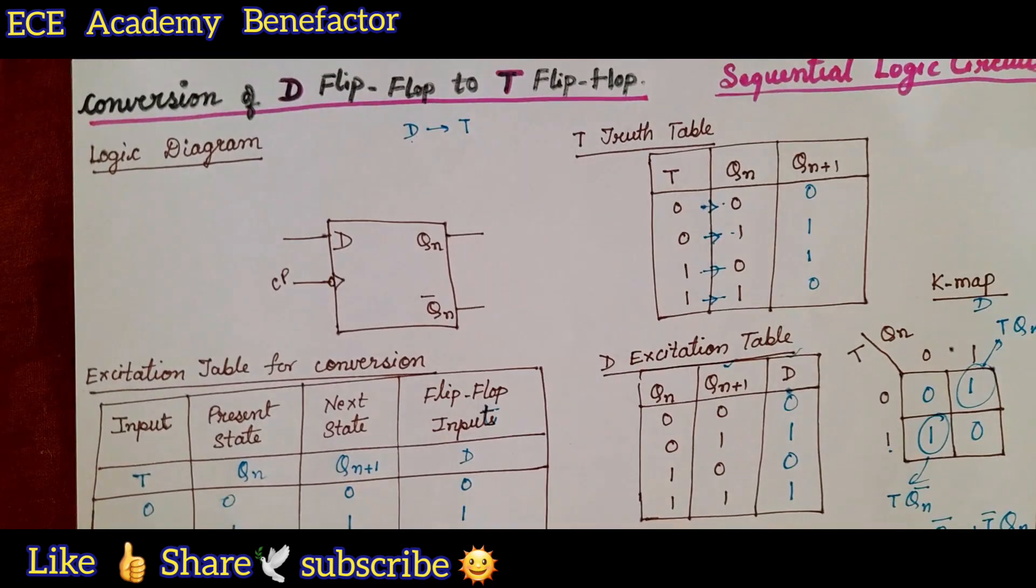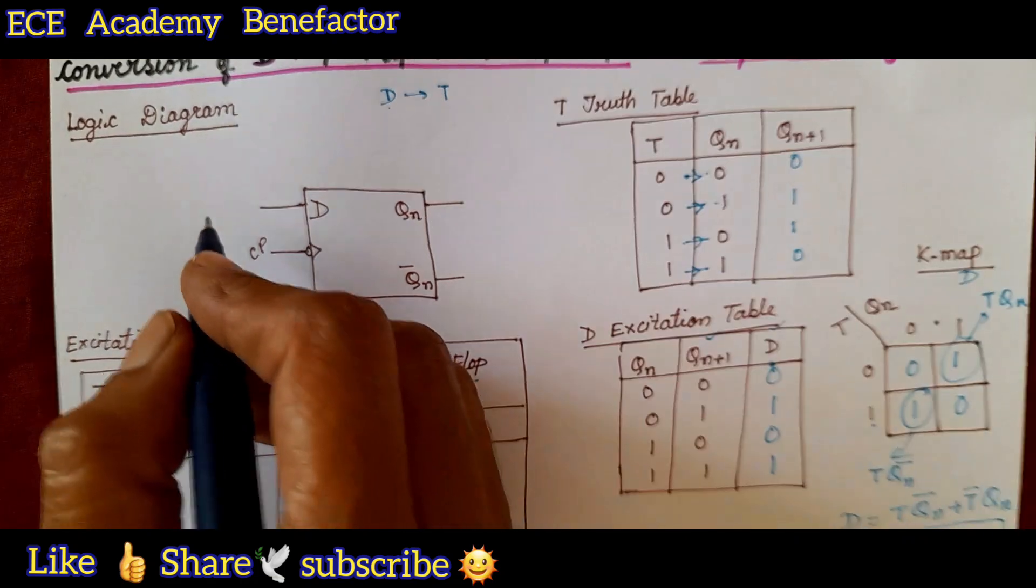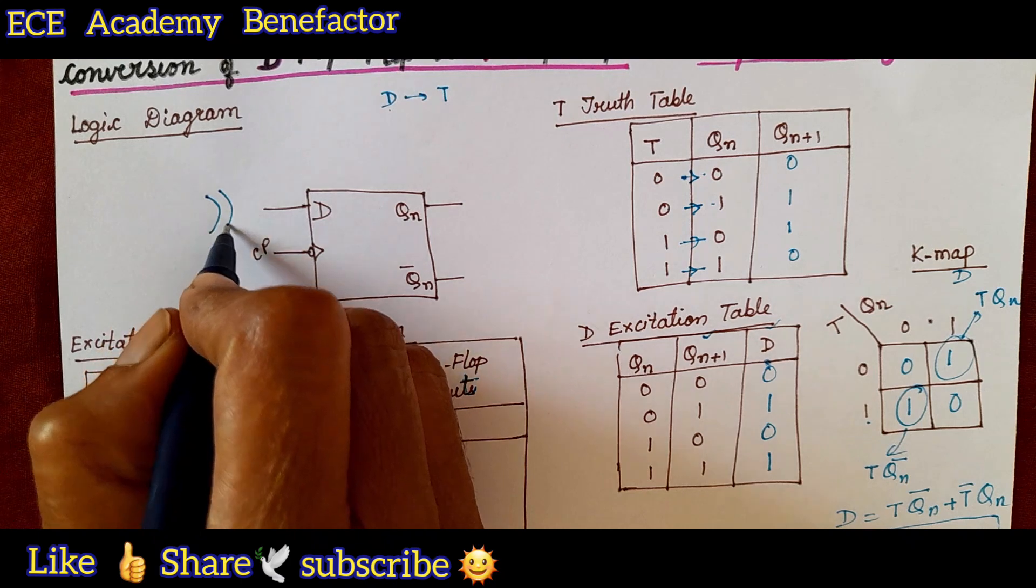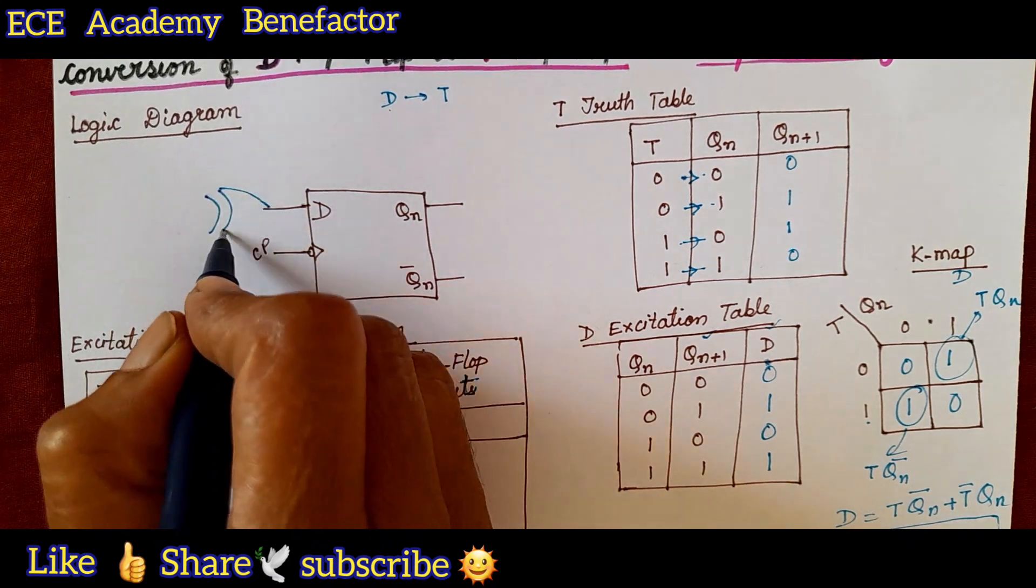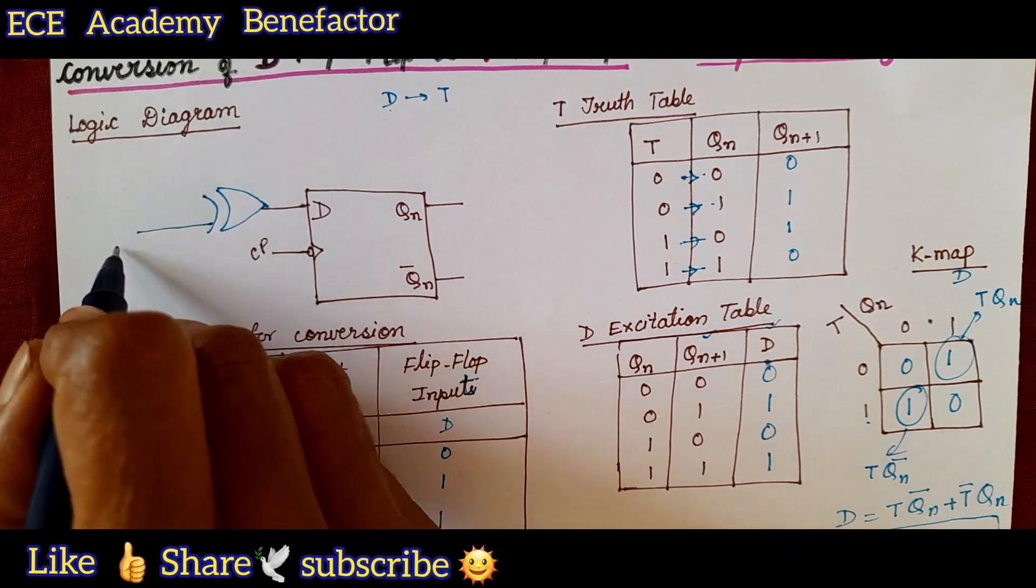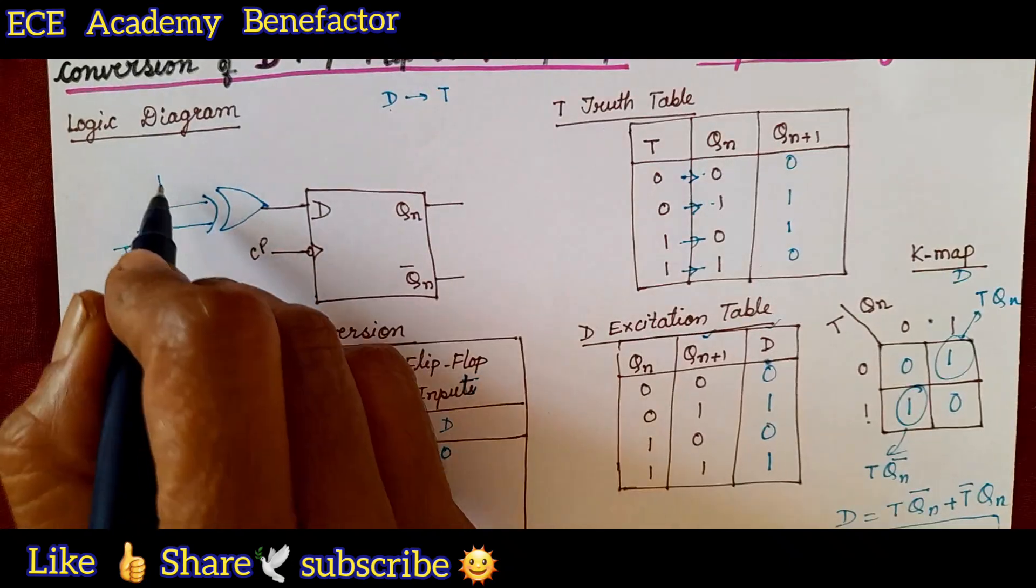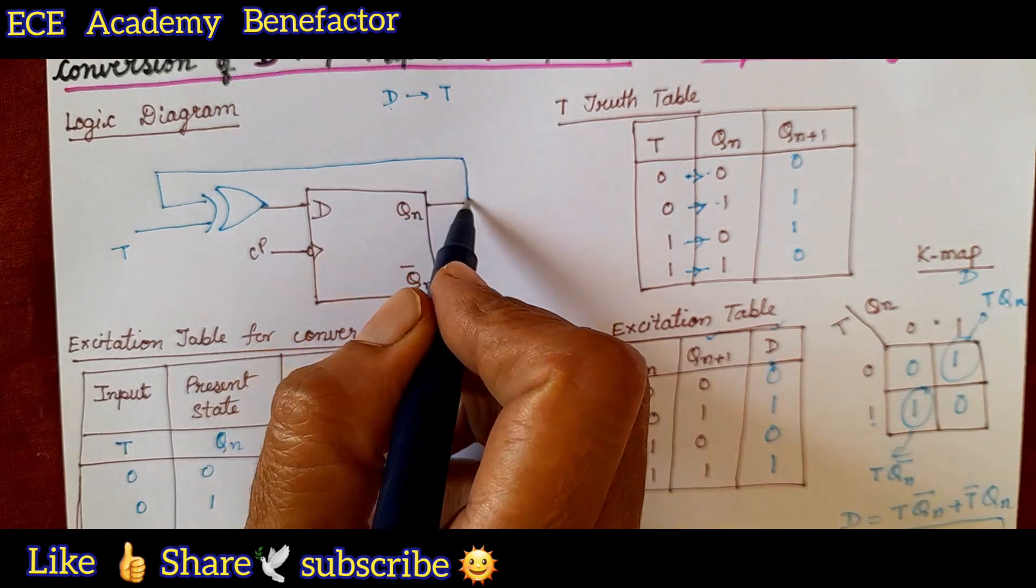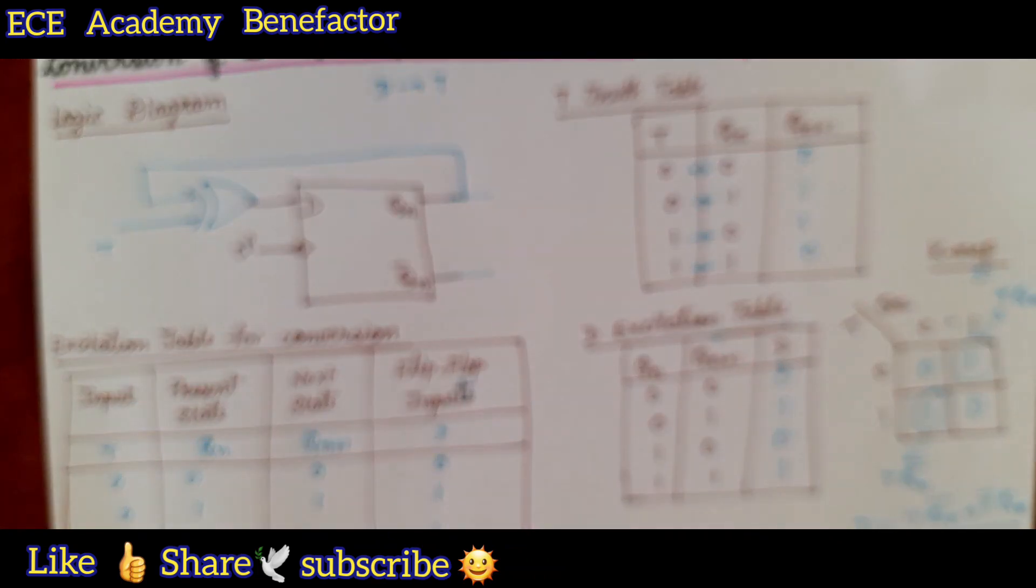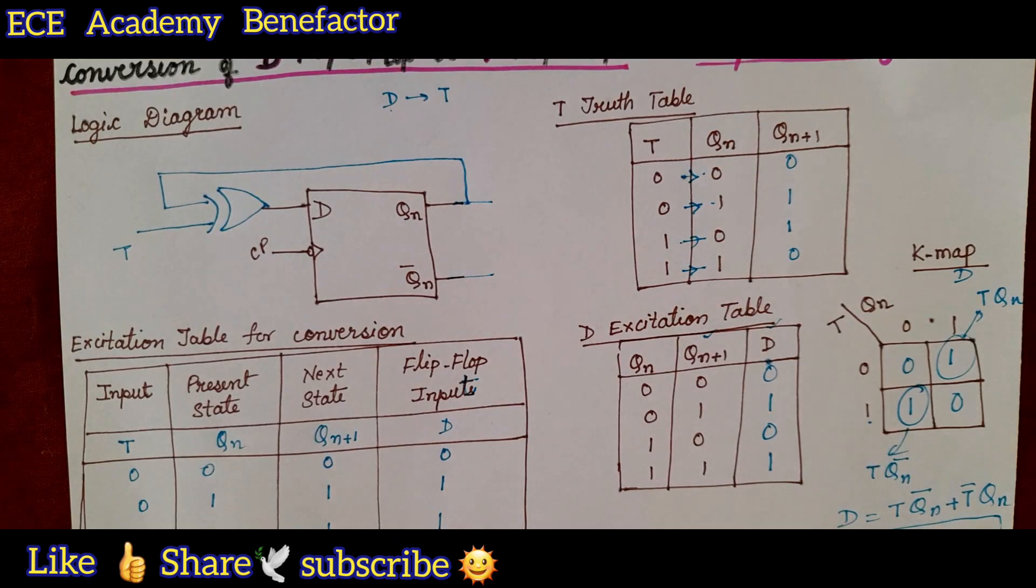At the D input what we need to connect an XOR gate whose inputs are T and Q n. At the D input we need to connect an XOR gate. The inputs here are one is T another one is Q n like this.